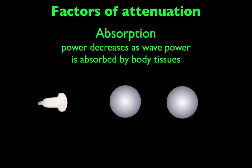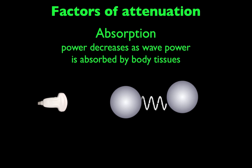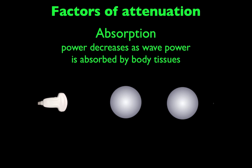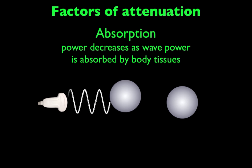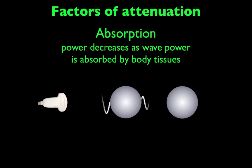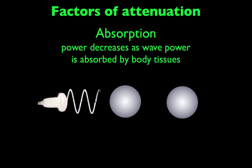The first factor is absorption. Absorption means that as the ultrasound wave travels through the body, some of the power or strength of that wave is absorbed by the exact tissues it encounters. That decreases the strength as it travels through them, because these are not just fluid-filled structures — they have some density to them, and so they absorb those sound waves.